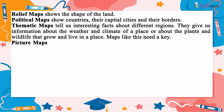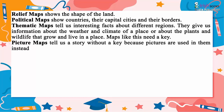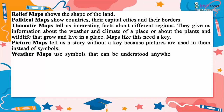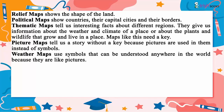Maps like this need a key. Picture maps tell us a story without a key because pictures are used in them instead of symbols. Weather maps use symbols that can be understood anywhere in the world because they are like pictures.